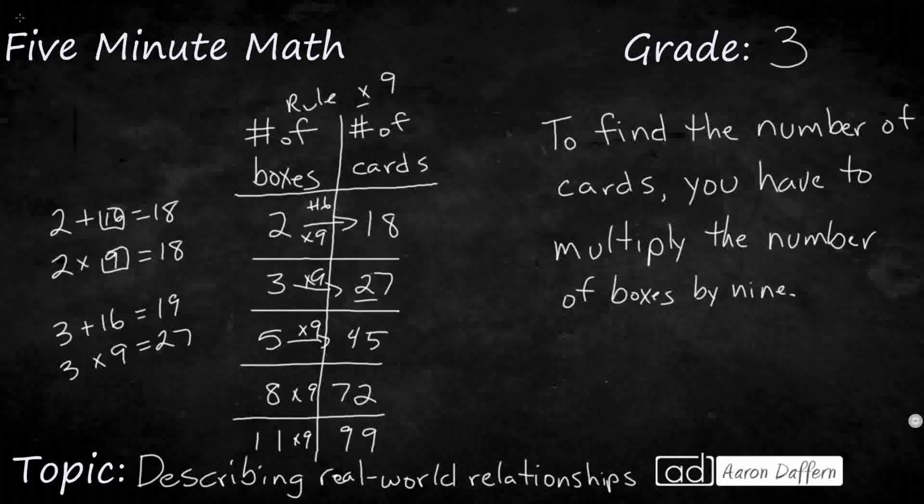So let's look at that sentence. To find the number of cards, so let's use an example here. 99. You have to multiply the number of boxes—that's 11—by 9. So does that work? 99 equals 11 times 9. Yes.